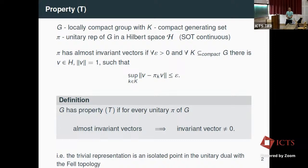This was essentially used in Kazhdan's original work. Another way to phrase this is that the trivial representation is an isolated point in the unitary dual equipped with the Fell topology.